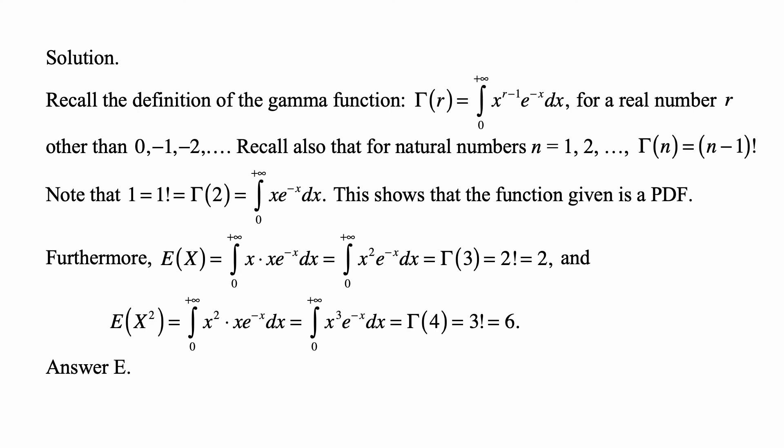And E(X squared) is the integral from 0 to plus infinity of x squared times x times e to the minus x dx. That's the integral from 0 to plus infinity of x cubed e to the minus x dx, so that's gamma of 4, and that's 3 factorial, so it's 6.